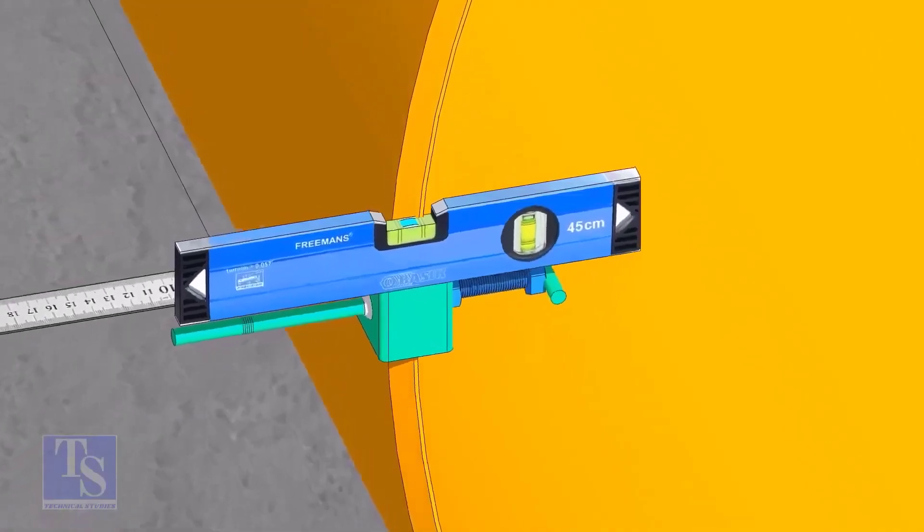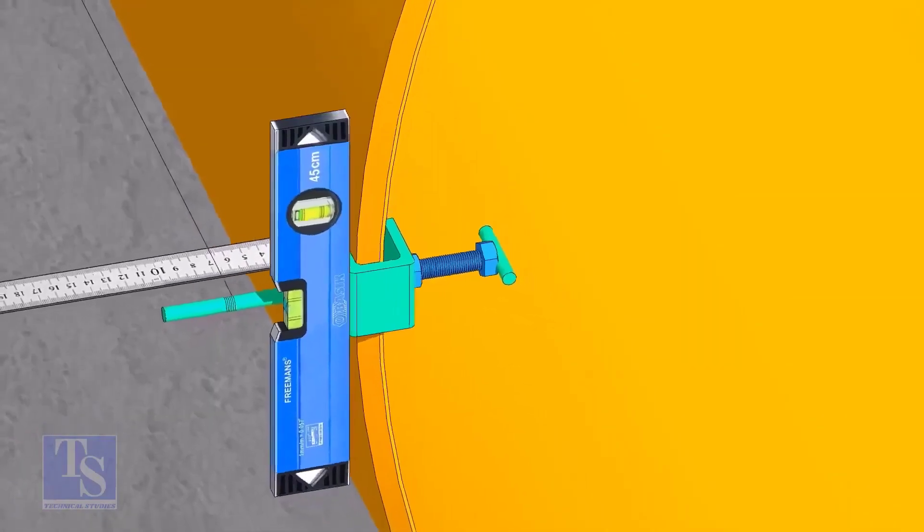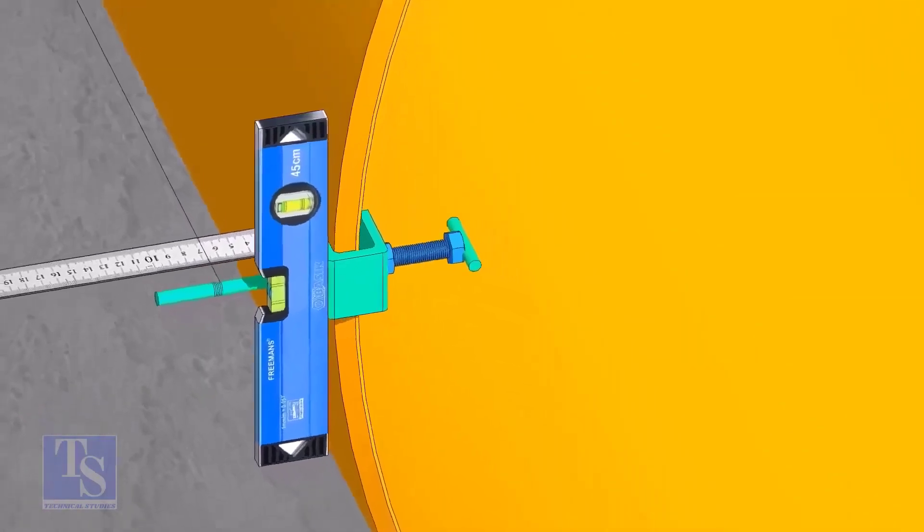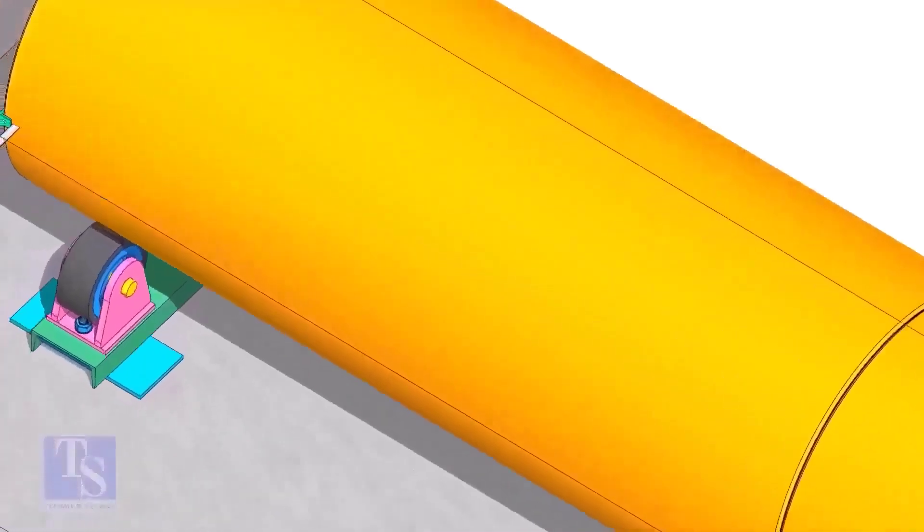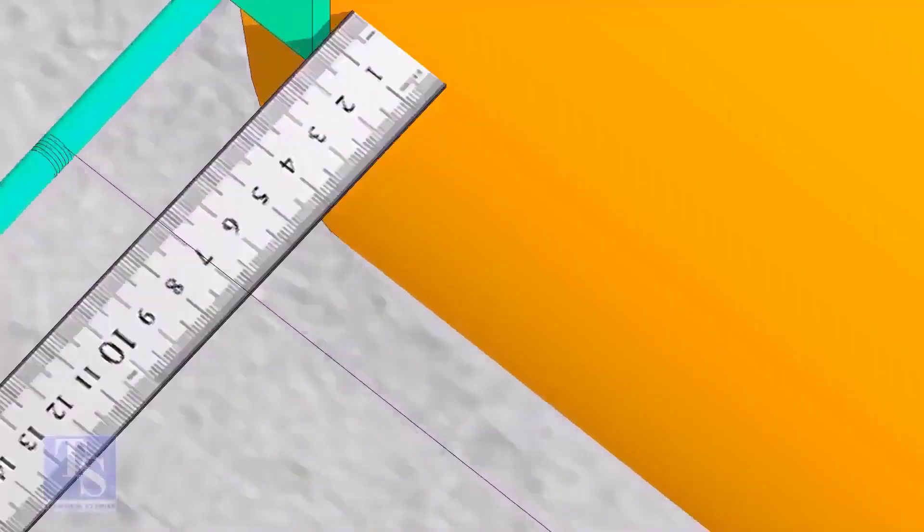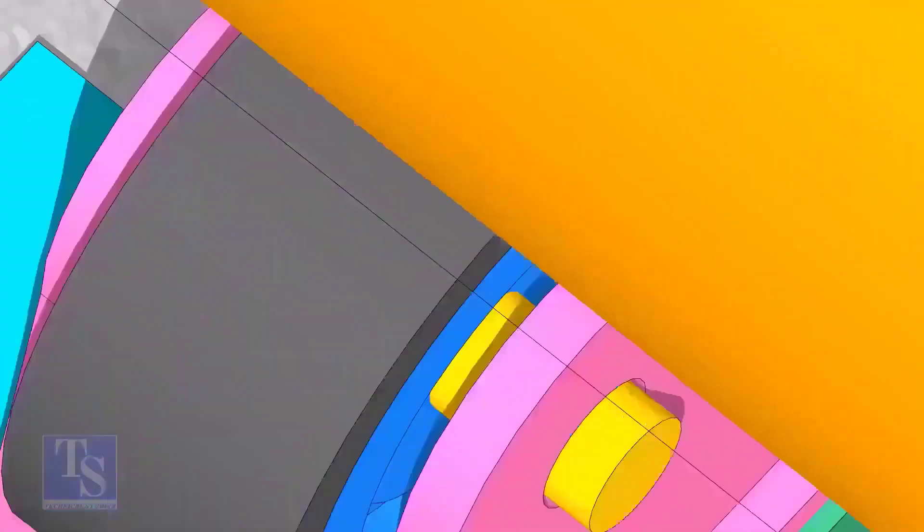As you put the clamp roughly 90 degrees apart, make sure the clamps are level. Tie the piano wire tightly on these clamps. Make sure the distance between the shell to the piano wire is equal at both ends.